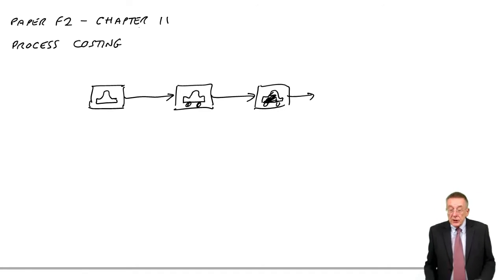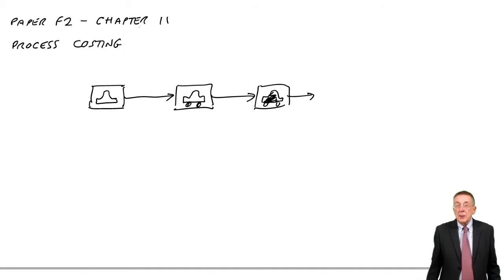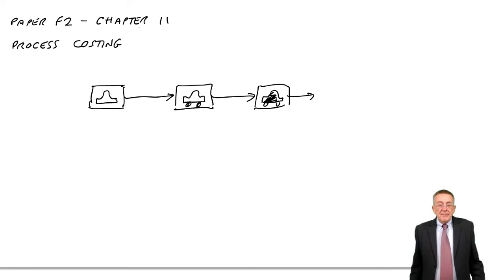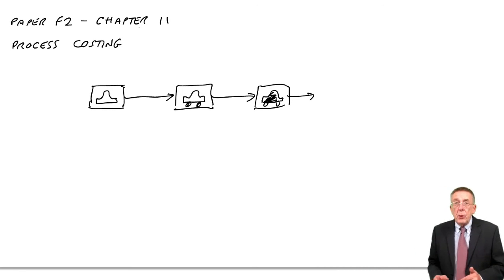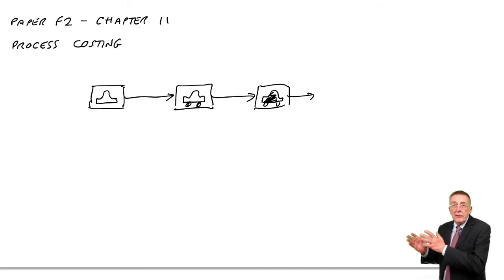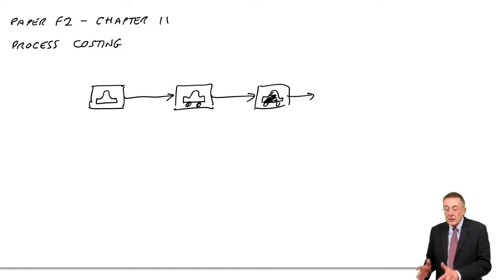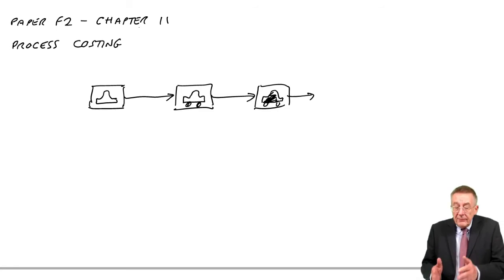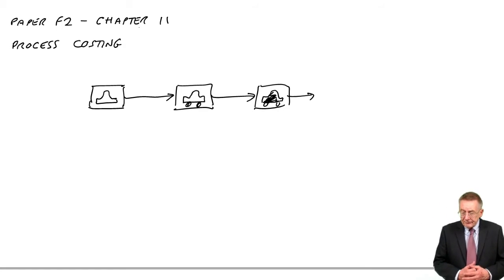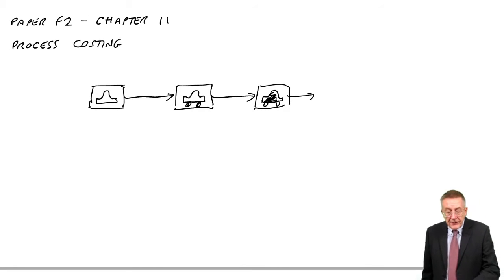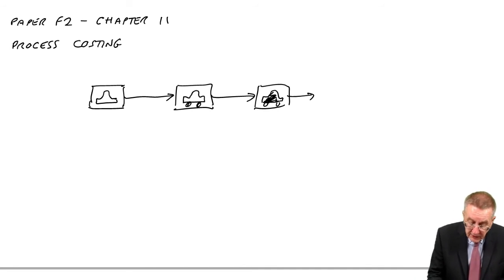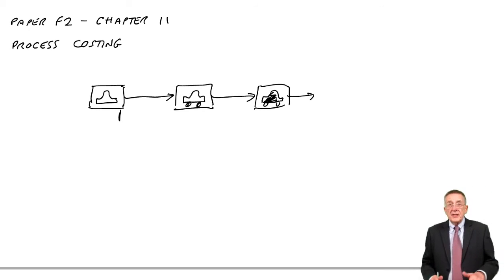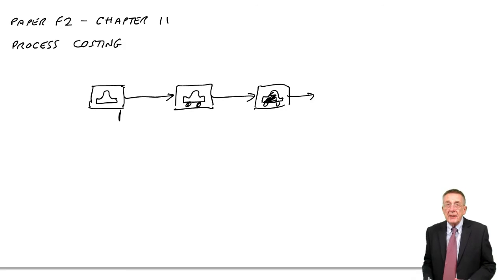When you've got that sort of situation with lots of processes taking place, one thing you want is to build up the cost of a finished car. But also, you're going to have inventories at each stage. At the end of the month, you'll have some cars which have just had the body built and haven't gone any further — they'll have the rest of the work done next month.